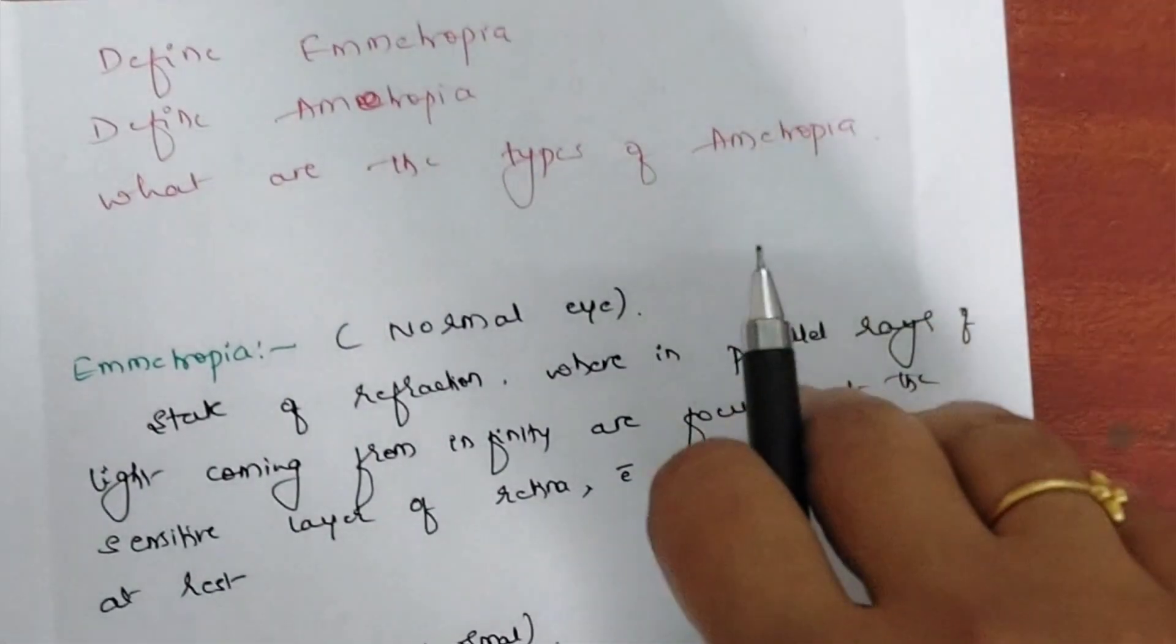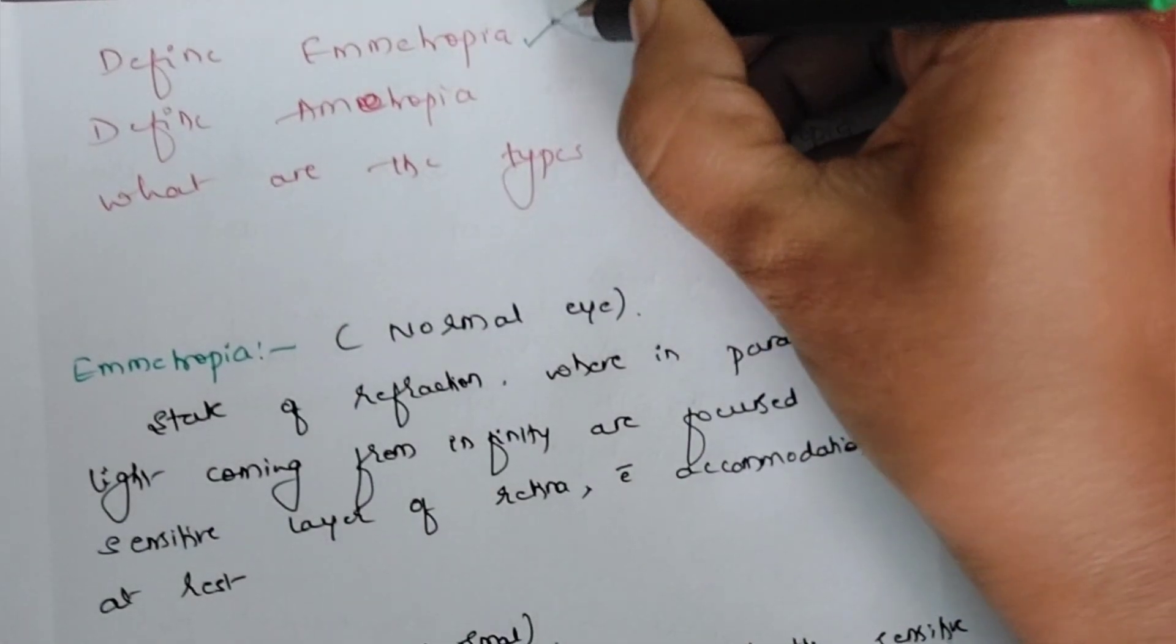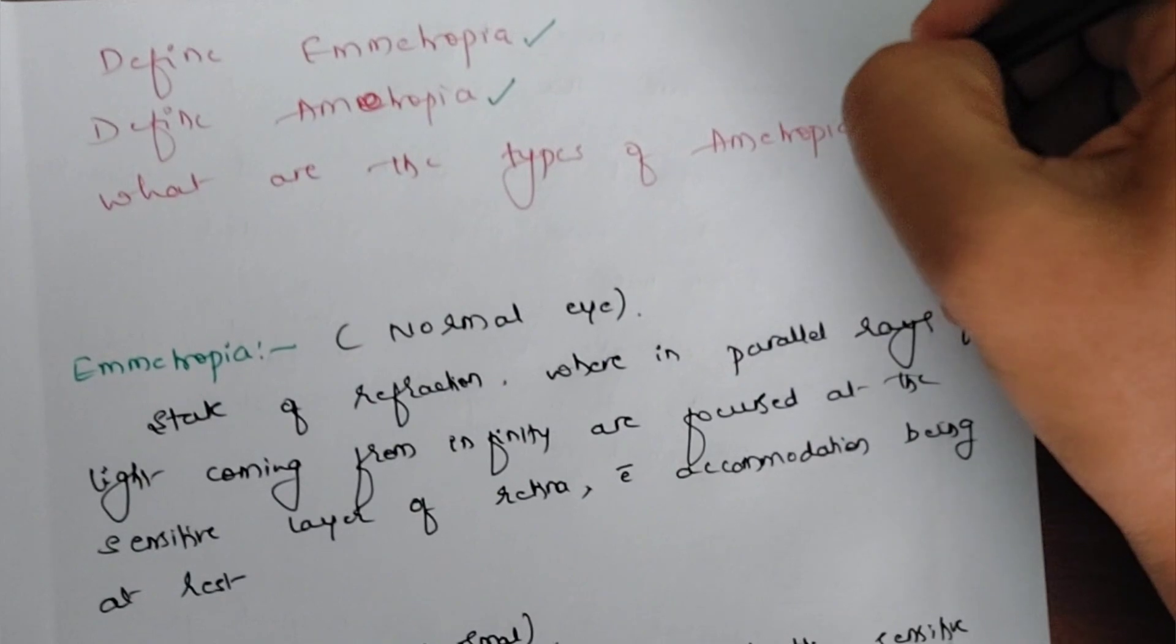The next question from the next chapter that is optics and refraction. It can be like define emetropia. They can even ask define ametropia and what are the types of emetropia.